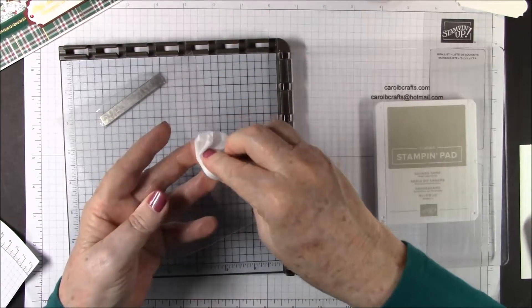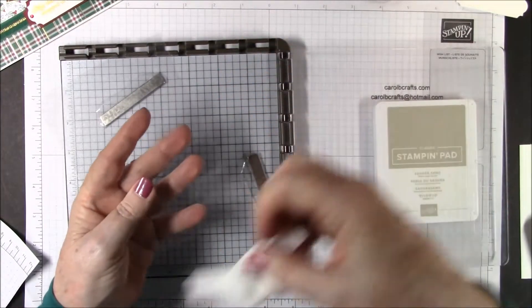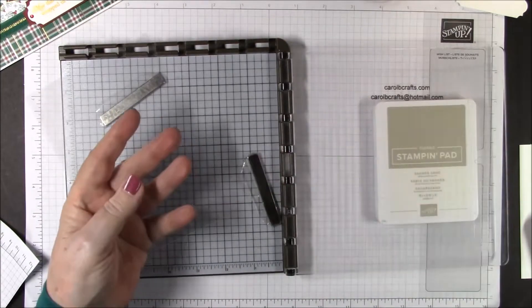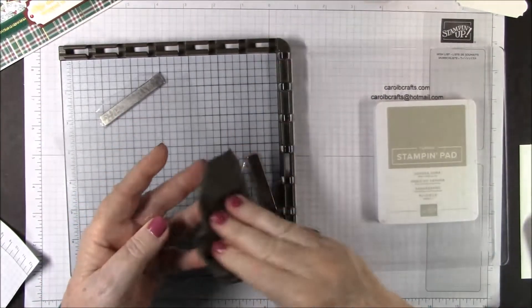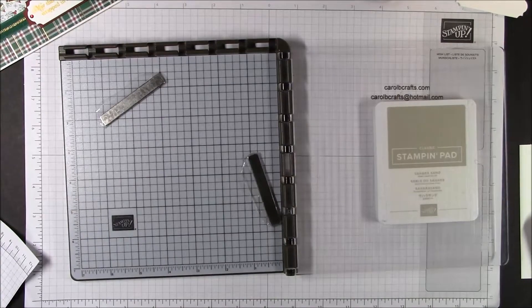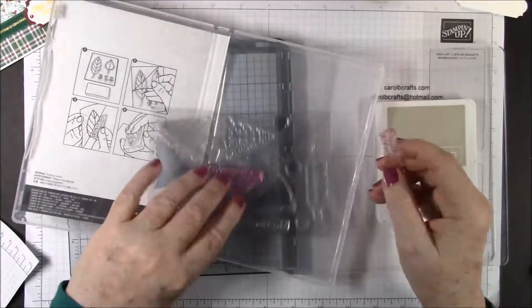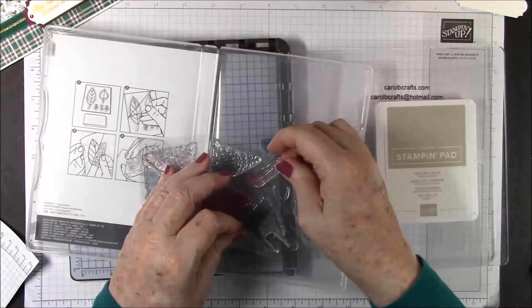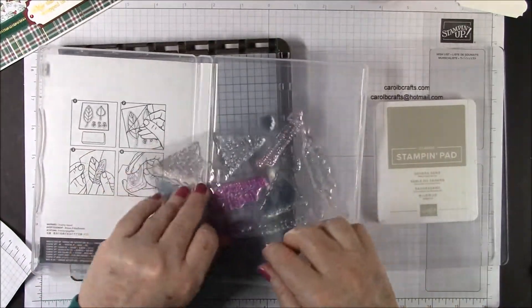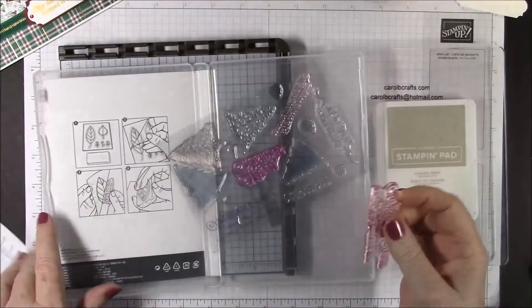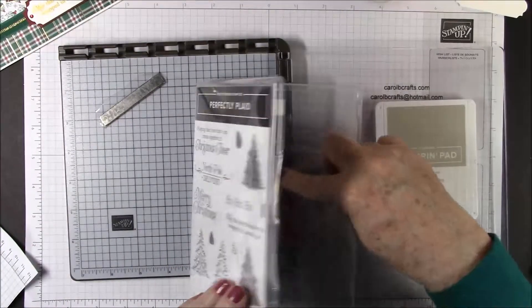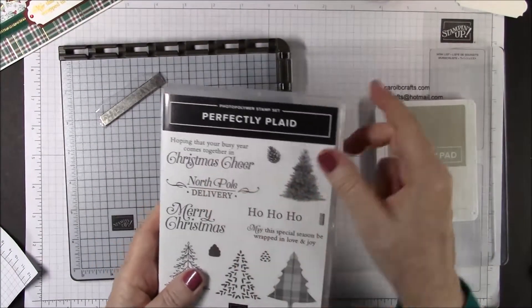We're going to clean off our plastic sheet because we'll be using that again. We'll dry it off with our microfiber cloth. We'll put our stamp away and get the next stamp, which is the "hope your busy year comes together in Christmas cheer."